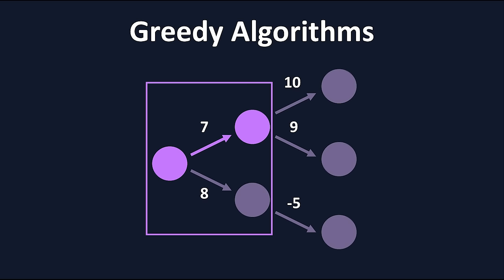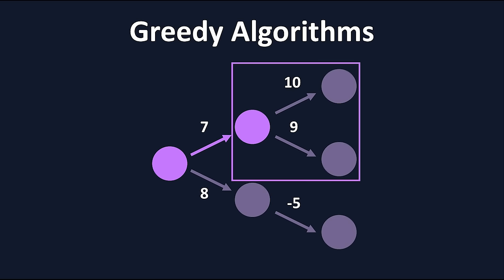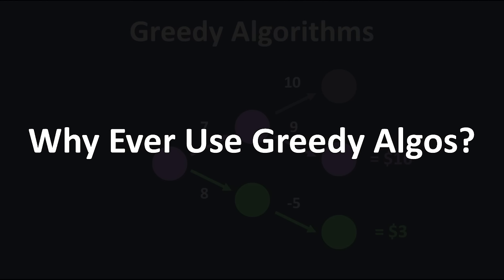From here, it looks at its next two choices, 9 and 10. Again, it chooses what's best in the moment, which is a 9, and reaches the end. The algorithm reached the end spending $16 total. But if we did it ourselves, we could reach the end spending $3 only. So, why ever use them if they're inefficient?